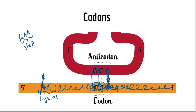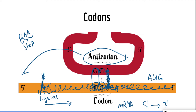mRNA molecules are read from the 5' end to the 3' end, which makes sense because the 5' end is the first part of the mRNA molecule that interacts with the ribosome. By convention, when you see a codon written, the first position is closest to the 5' end and the last position is closest to the 3' end. For example, in the codon CCU, the first C is the 5' end and the U is the 3' end.